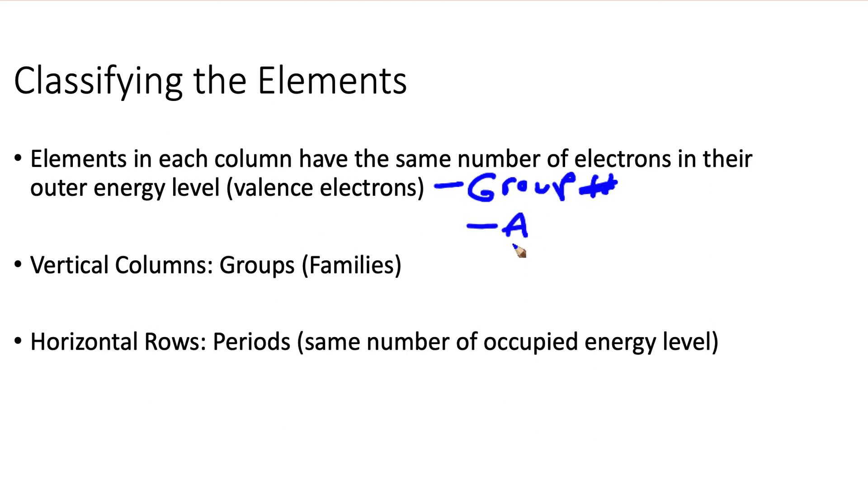1A, 2A, 3A, 4, 5, 6, 7, 8A. That tells you how many valence electrons an element has. And we'll get to that a little more when we talk about bonding.